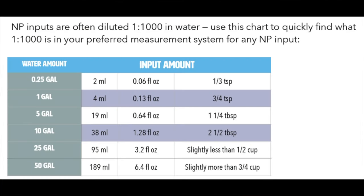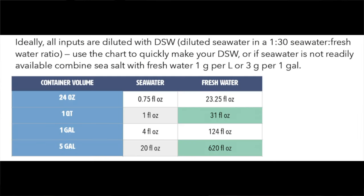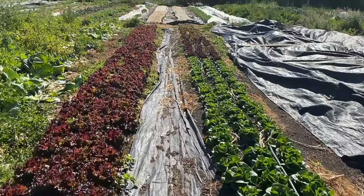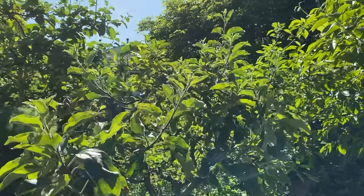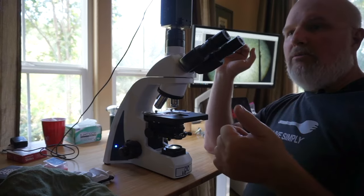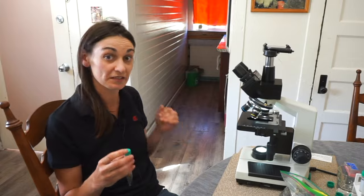One-to-one thousand dilution is going to come up over and over again with these preps — there's a handy chart in the book you can use to get all the amounts you need. Diluted seawater: you can make your own using the chart if you have access to seawater, or use sea salt. Regenerative soil is the breakthrough that farmers and gardeners worldwide are using to unlock the full potential of their plants and soils.